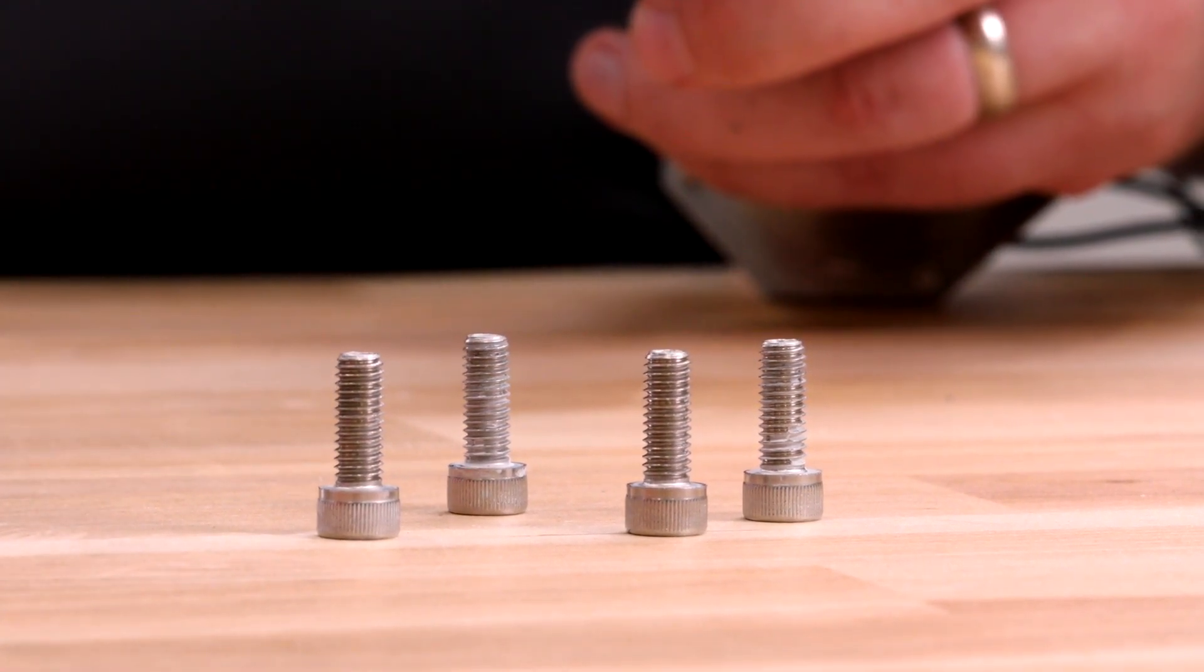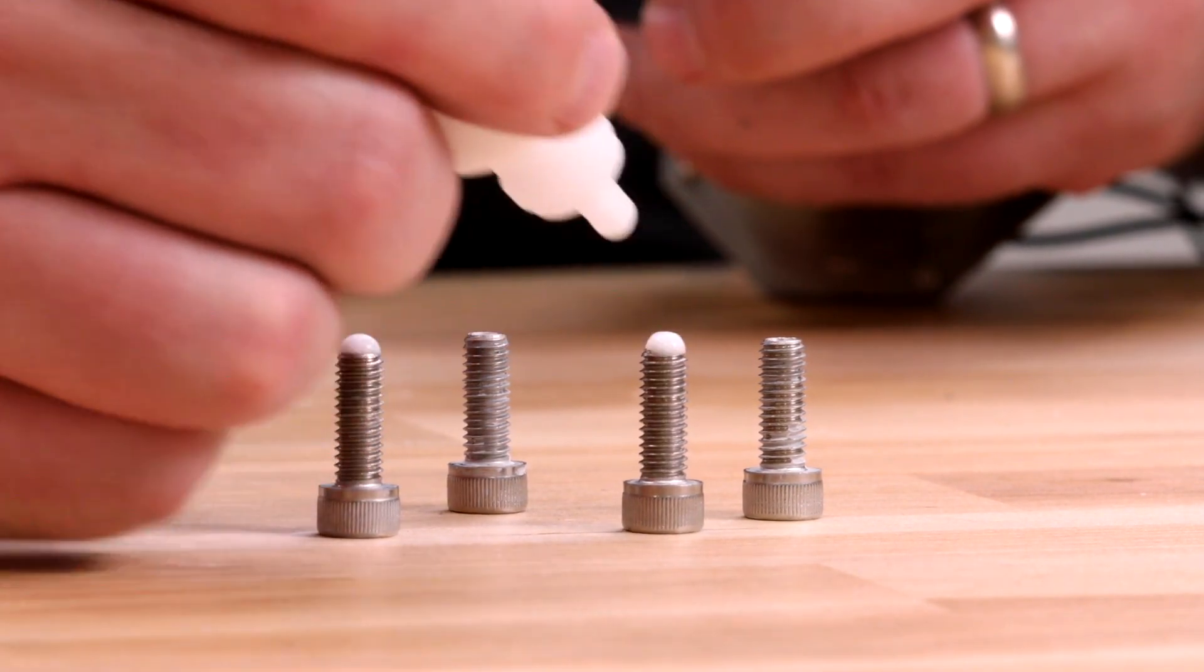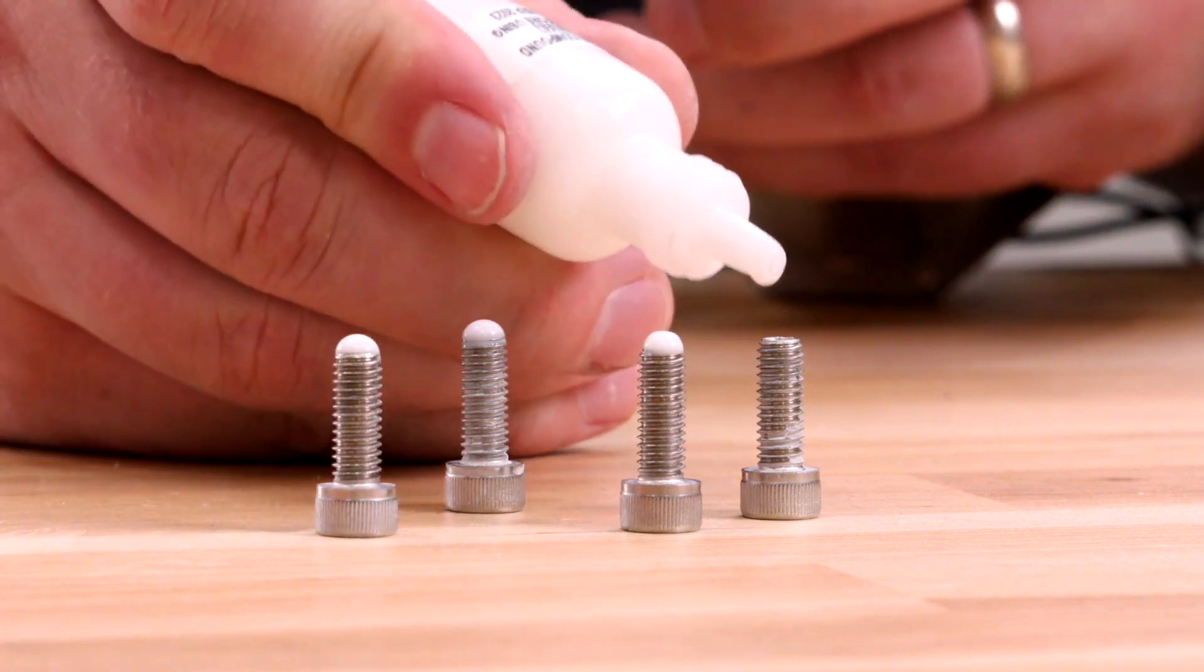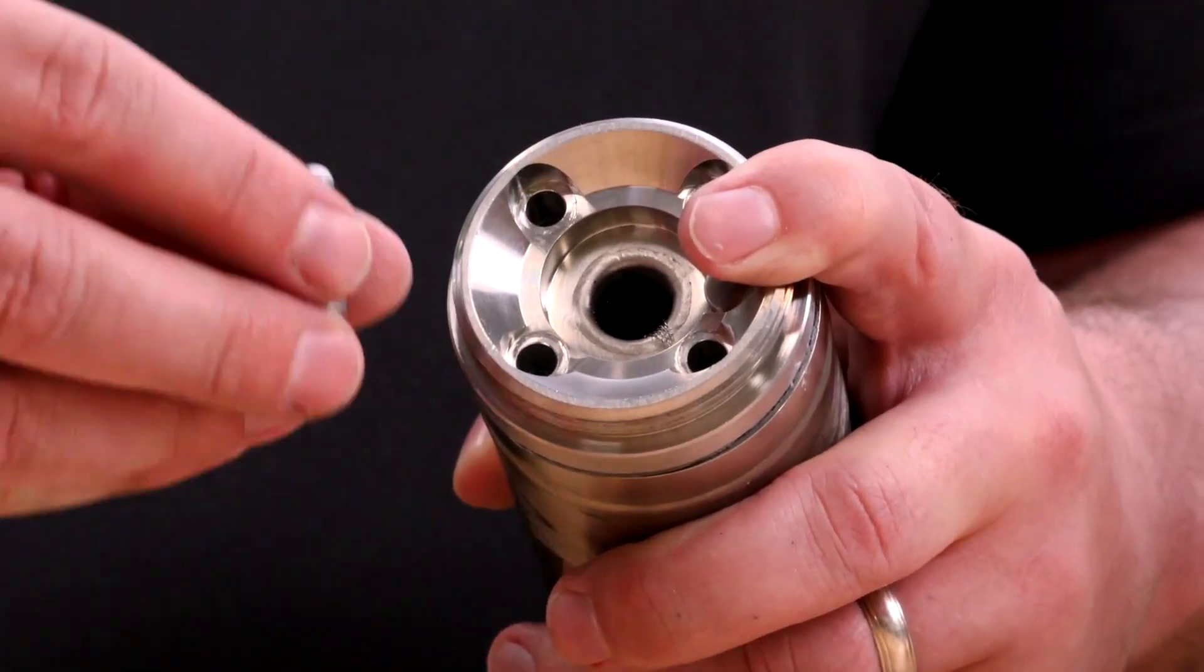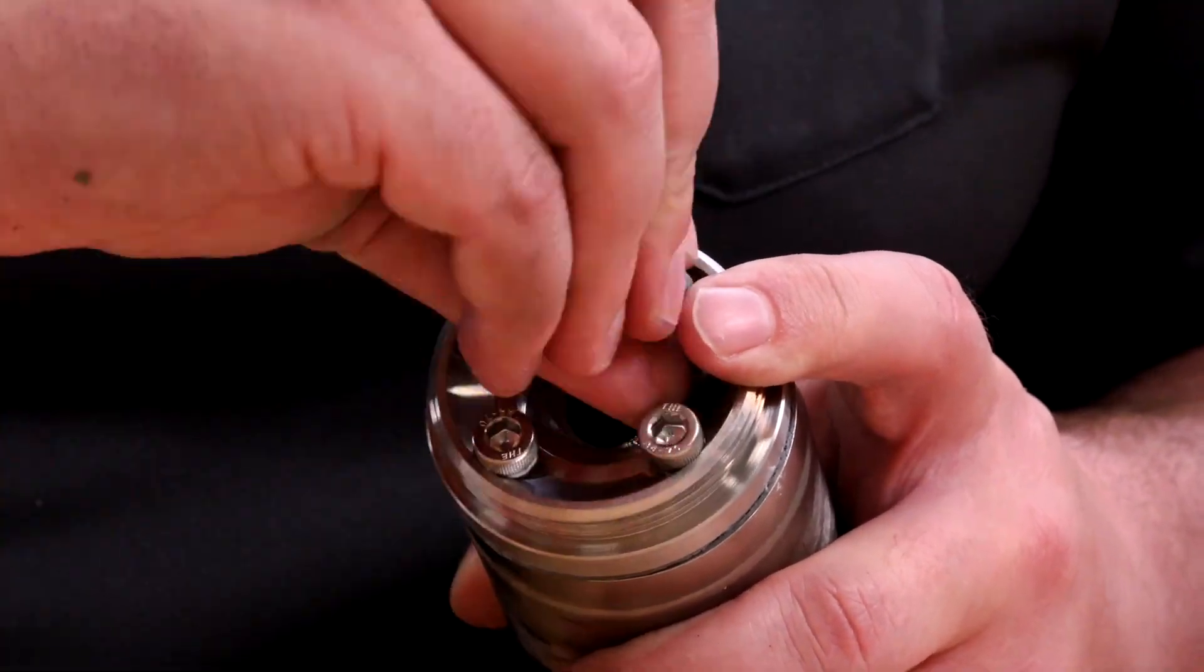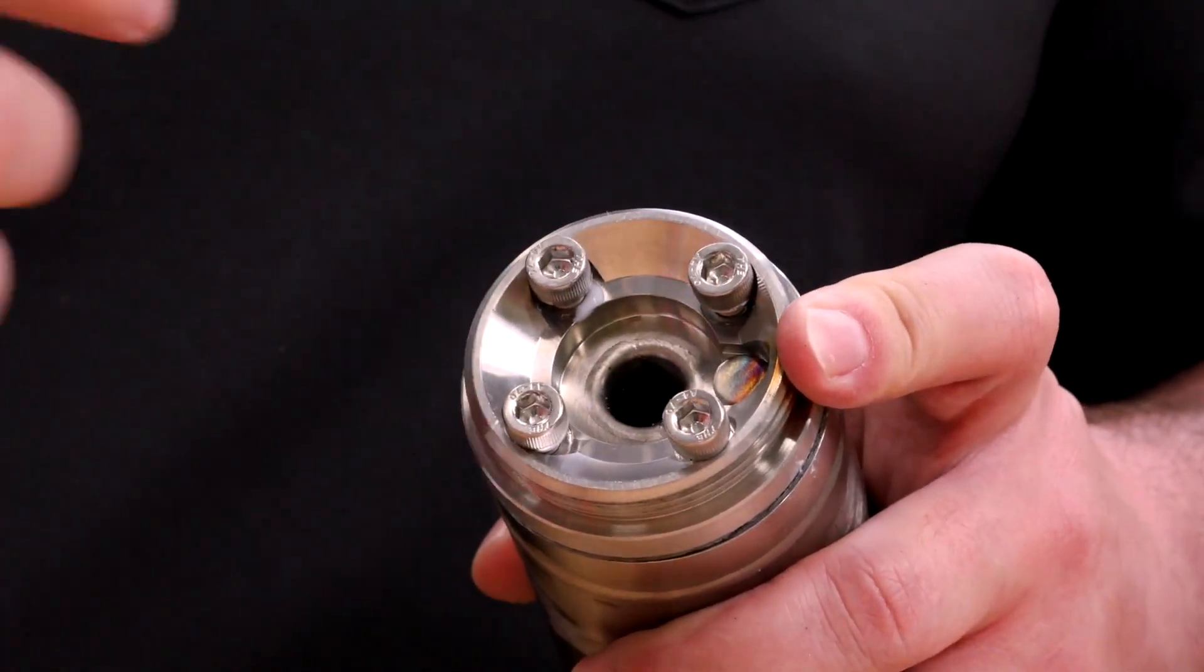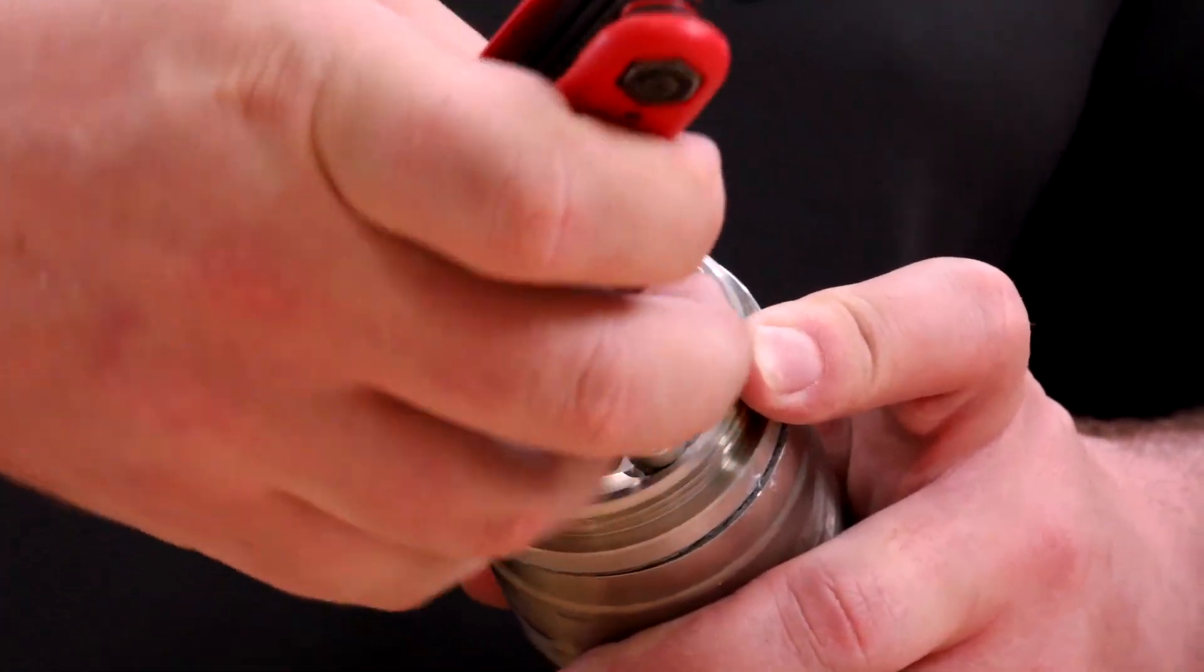Apply a small amount of anti-seize compound to the screw threads. Use the screws to secure the new O2 cell to the heater tube. Torque the screws to 35 inch-pounds.